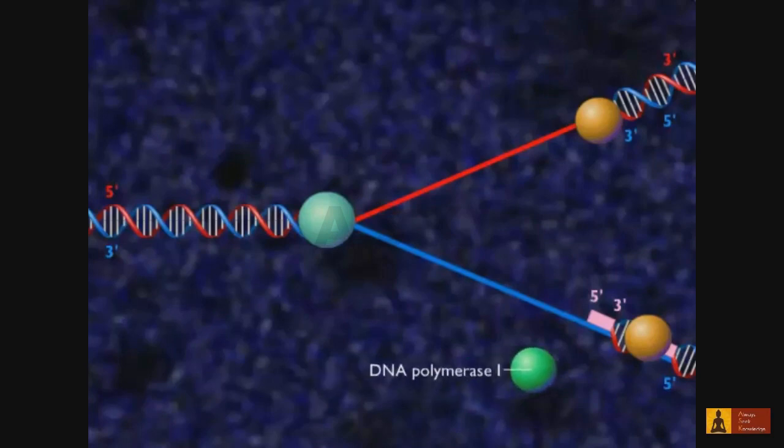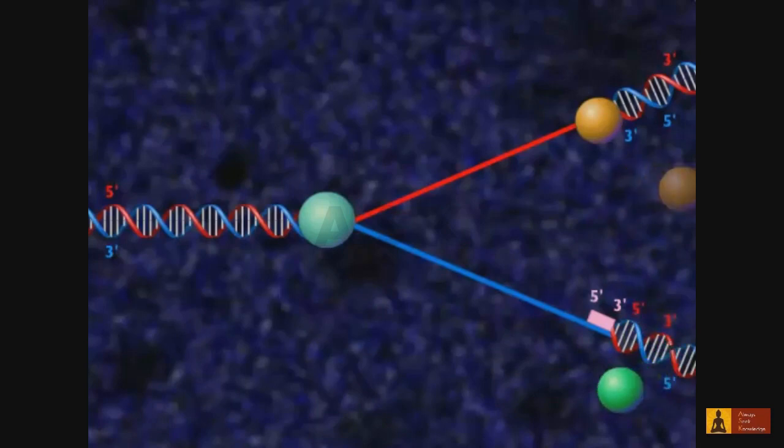DNA polymerase 1 replaces DNA polymerase 3, removes the RNA, and replaces it with DNA.